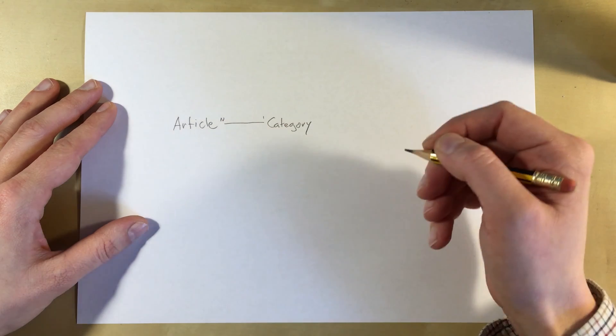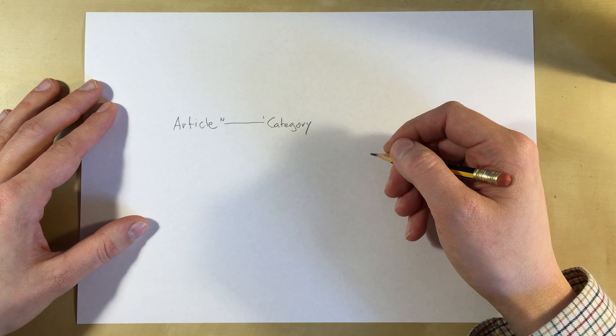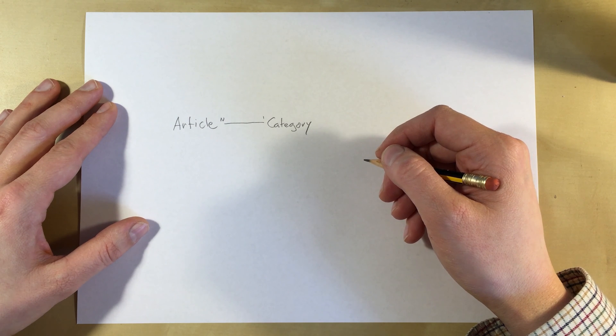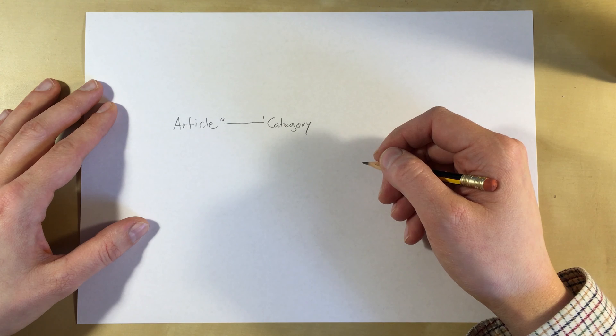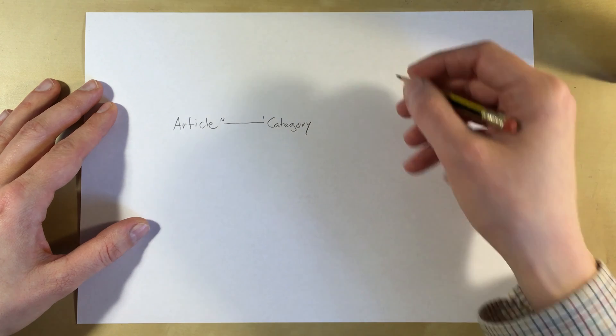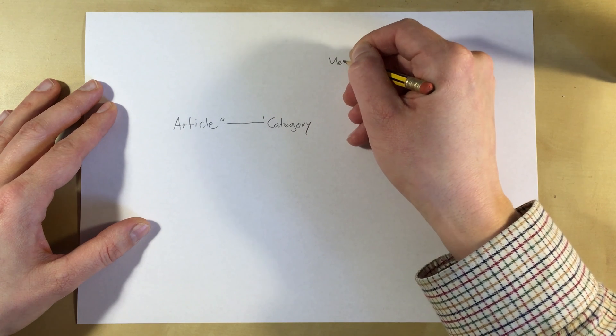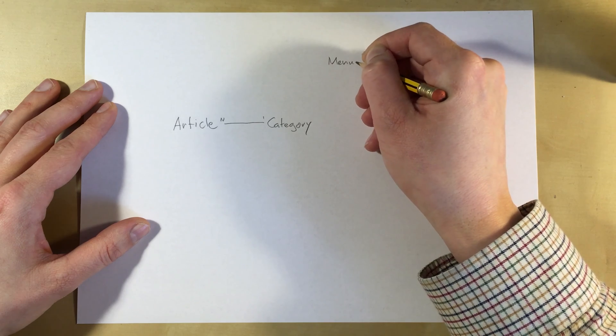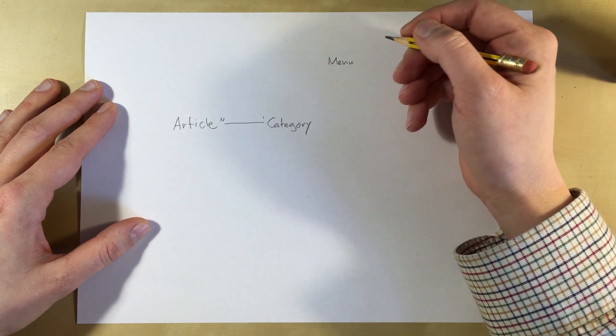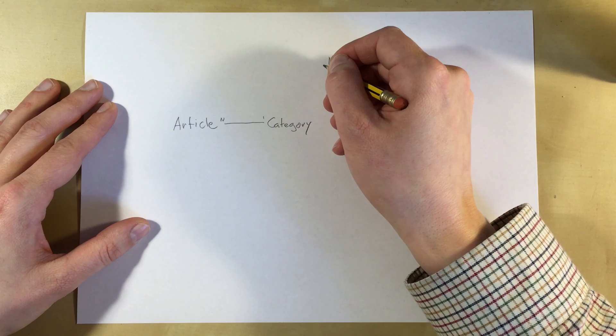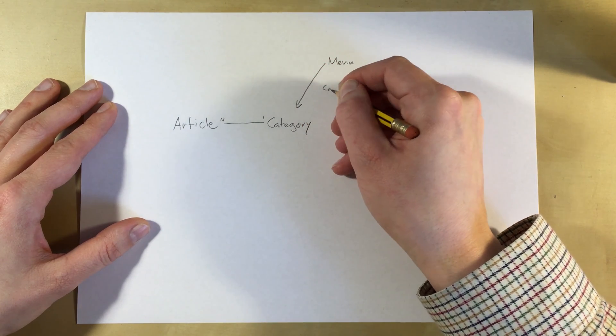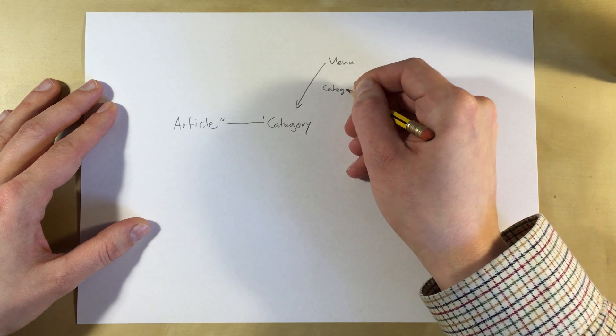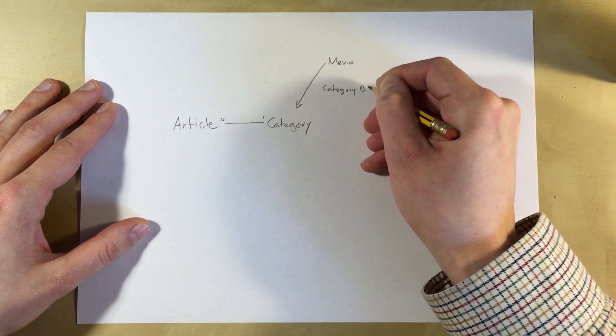Why would we want to use categories? One reason is that there are menus that we can create, and we can have menus that link to a specific category. So it could be a category block.